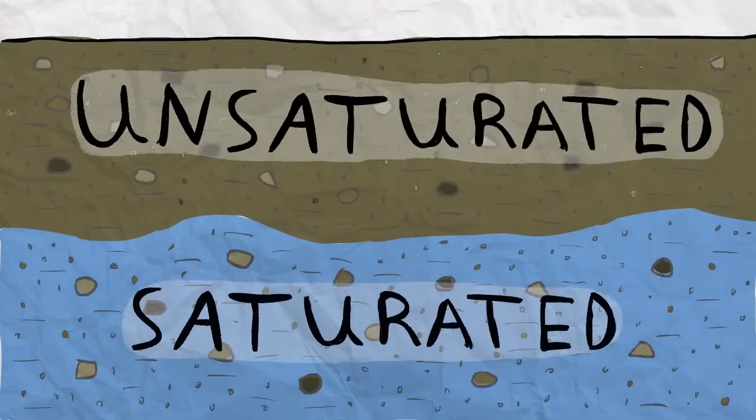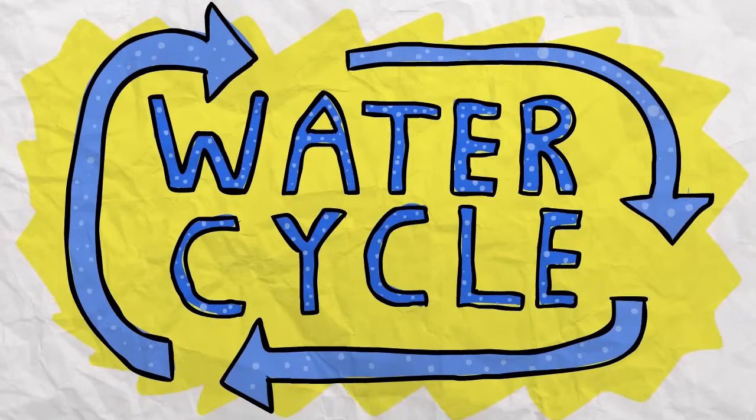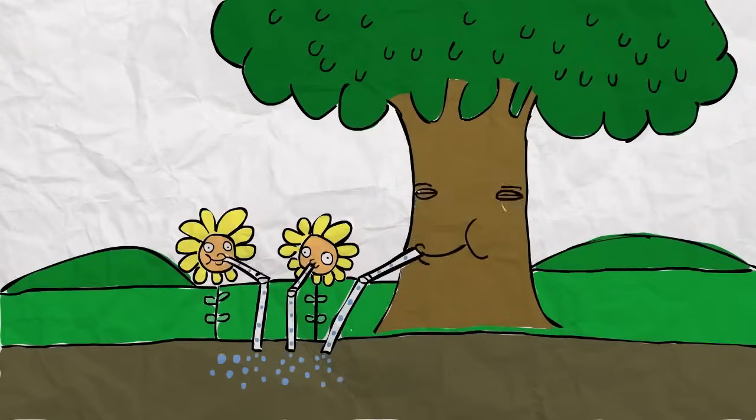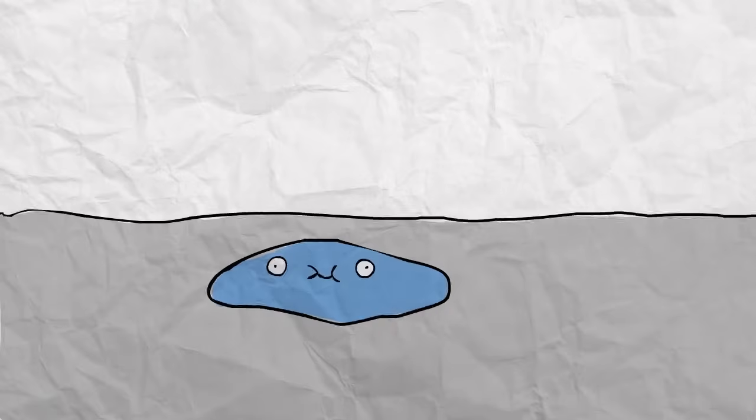So, how does all this water end up in the ground? Well, it's all a part of the good ol' water cycle. When it rains, some water gets soaked up by plants. Some water runs off the soil and into streams, lakes, or even the ocean. Other water gets stuck on the surface and eventually evaporates back into the air.